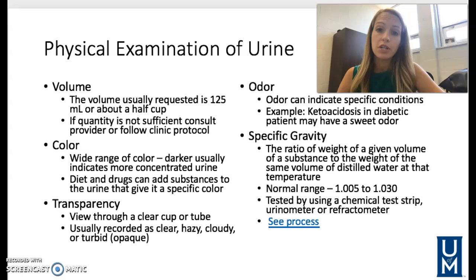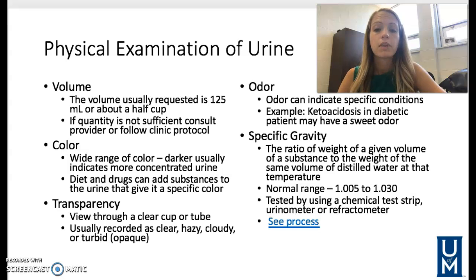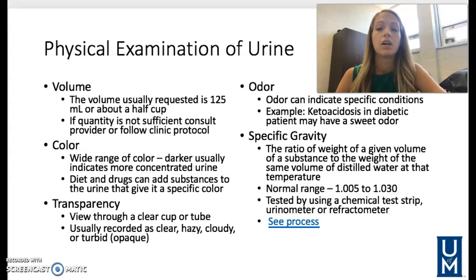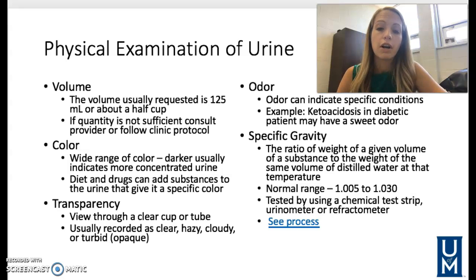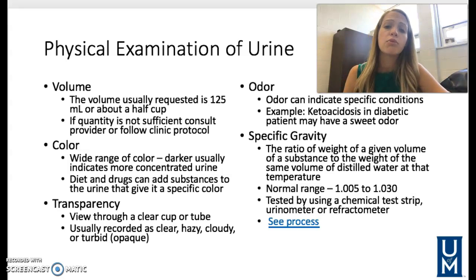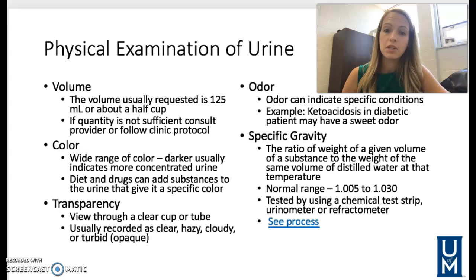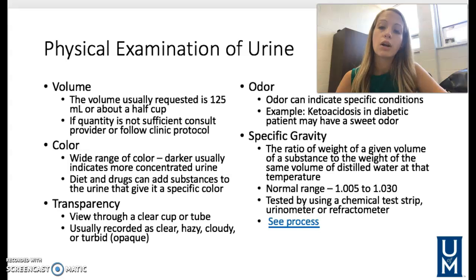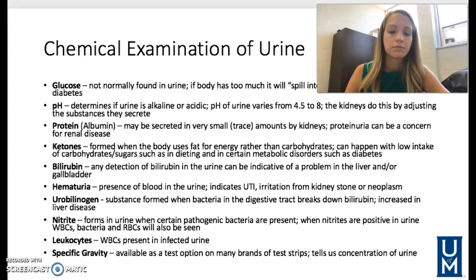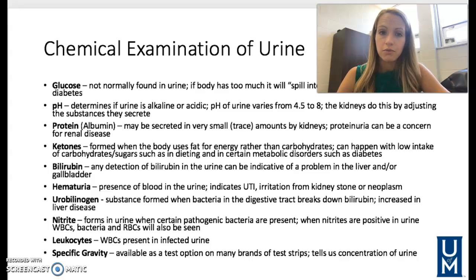Transparency tells us if urine is clear, hazy, cloudy, or turbid. There may be an odor — a sweet odor may indicate ketoacidosis or a diabetic patient, while a strong bad odor may indicate a urinary tract infection. Specific gravity is the ratio of the weight of a given volume of a substance to the weight of the same volume of distilled water at that temperature. The normal range is 1.005 to 1.030, and it can be tested using chemical test strips, a urinometer, or a refractometer.